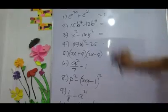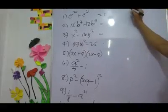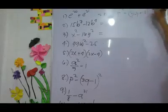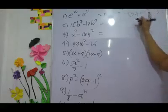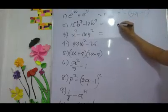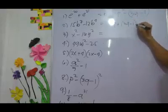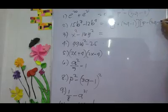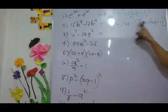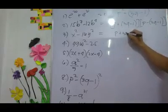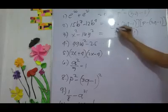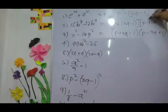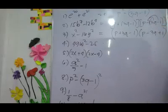Next, number 8. We have p² minus (3q minus 1)². This is already in the difference of two squares form, so we apply plus and minus: (p plus 3q minus 1)(p minus 3q minus 1). Or you can write it as (p plus 3q minus 1) times (p minus 3q plus 1) — just distribute the negative 1, which makes the 1 positive and 3q negative.